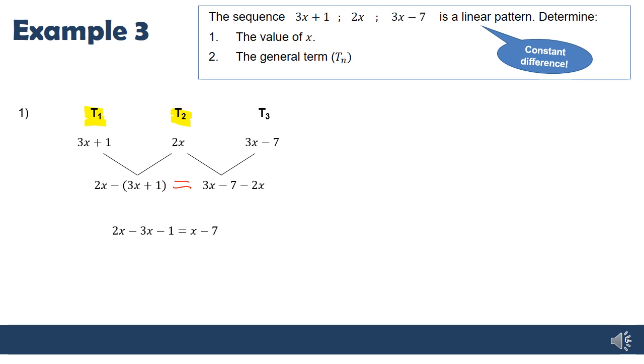Simplifying, I've distributed the minus into the brackets. On the left I get -x - 1, and on the right x - 7. Further simplifying and taking x's to one side, I'm left with x = 3.